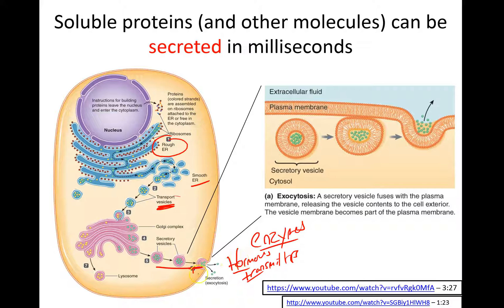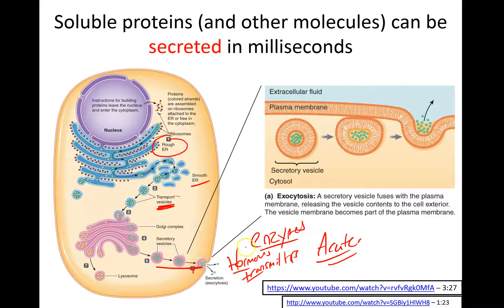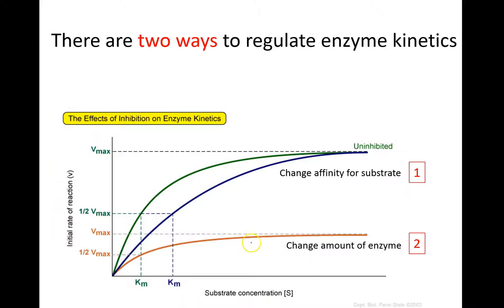These can be rapidly released within milliseconds — this is an acute change typically. They get secreted, and then either the substrates in the case of hormones and transmitters, or the enzymes themselves, their concentrations increase rapidly. So a very important way that changes to enzyme kinetics can occur is through secretion — pretty rapidly — either by changing the amount of substrate or changing the amount of enzyme.